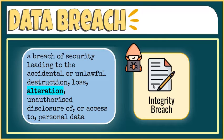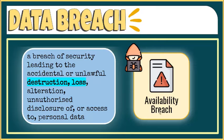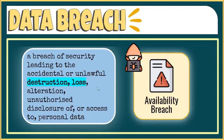The file and the data it contains remains accessible, but may no longer be reliable. The third type is availability breach. This results from the accidental or intentional loss or destruction of personal data. For example, when computers stop working and there is no backup system in place, they usually lead to this type of breach.